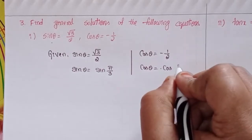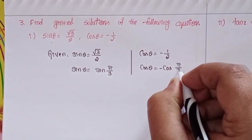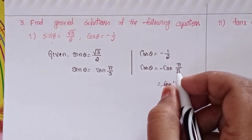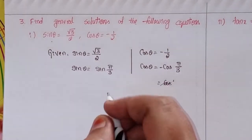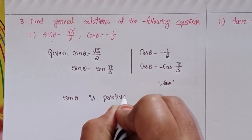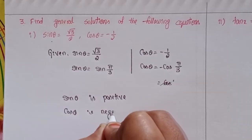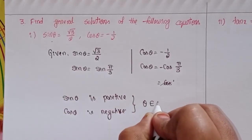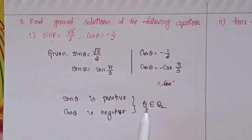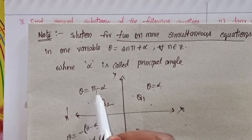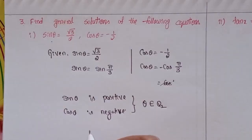cos θ = -1/2 means cos(π - π/3), that is -cos(π/3). Here cos is negative and sin is positive, so sin θ is positive and cos θ is negative — that means theta belongs to Quadrant 2.